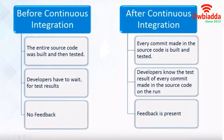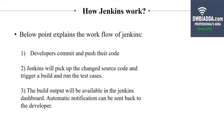Before continuous integration, developers had to wait for test results because all these things were done manually, and most testing tools were only introduced a few years ago. After continuous integration, developers know the test result of every commit on the run and can check results in a fraction of seconds. Also, after continuous integration, feedback — a calculated set of results helping us understand flaws in our code — is now available.